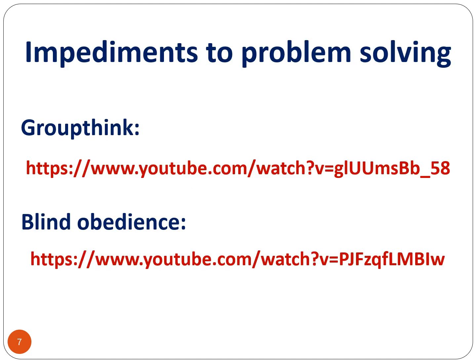Finally, let's talk about specific types of obstacles called impediments to problem solving. The first is groupthink. Groupthink occurs when a group of individuals agree to a conclusion without critically thinking through all of the potential consequences of their decisions. The first video linked on this slide discusses how groupthink was responsible for what is known as the Bay of Pigs fiasco that occurred during John F. Kennedy's presidency.